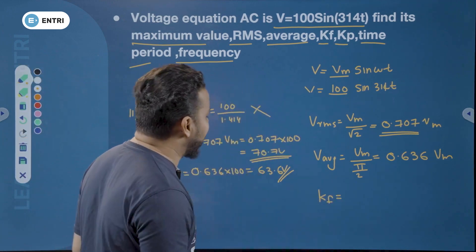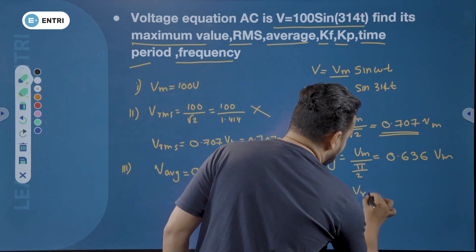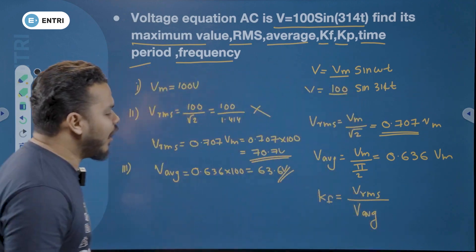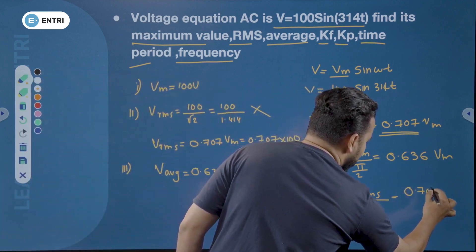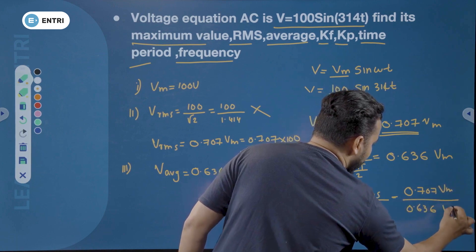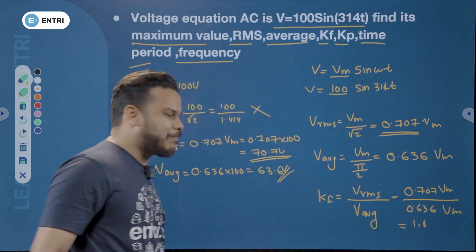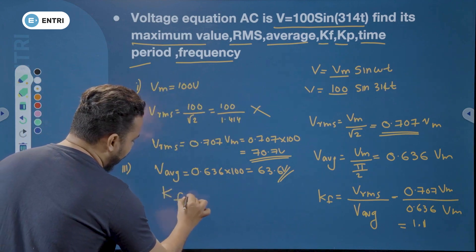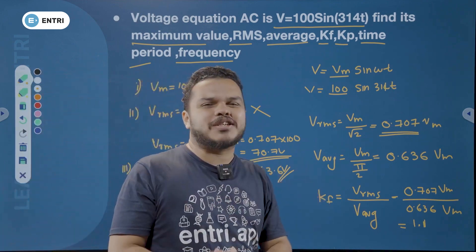Form factor is VRMS divided by V average. That will be equal to 0.707 × VM divided by 0.636 × VM. You should memorize this value: 1.11. So form factor KF is equal to 1.11. In your objective exam, you can use this directly.